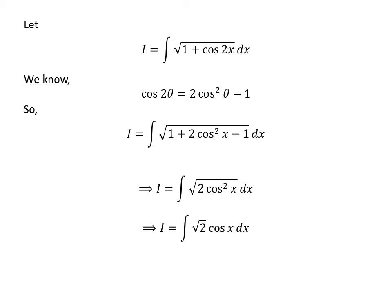As square root of square of cosine x is cosine x, so I is equal to the integral of square root of 2 times cosine x.